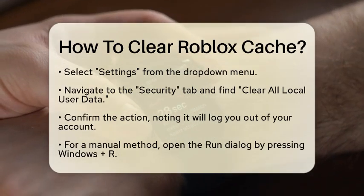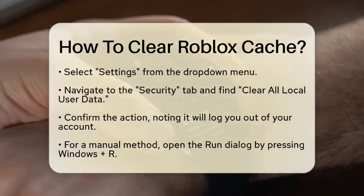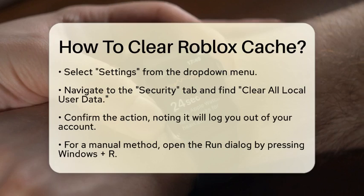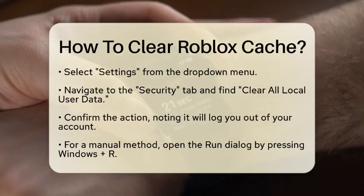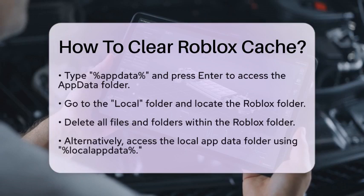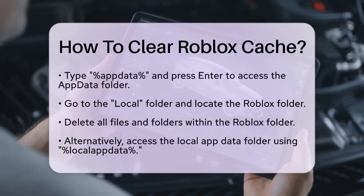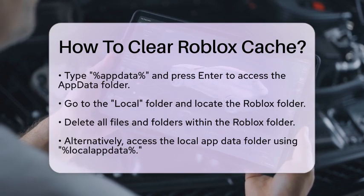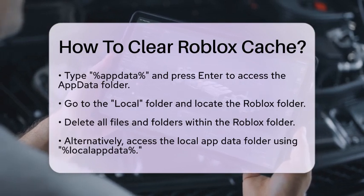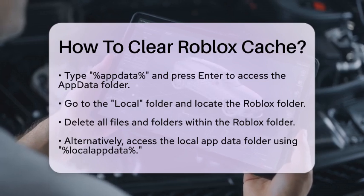If you prefer a manual approach, you can clear the cache using your computer's file system. Start by pressing the Windows key and the letter R at the same time to open the Run dialog box. In this box, type in the command %appdata% and press Enter. This will take you to the Appdata folder. Next, navigate to the Local folder and look for the Roblox folder. Once you find it, delete all the files and folders within the Roblox folder.